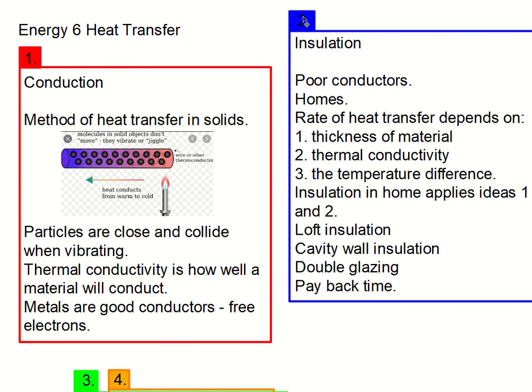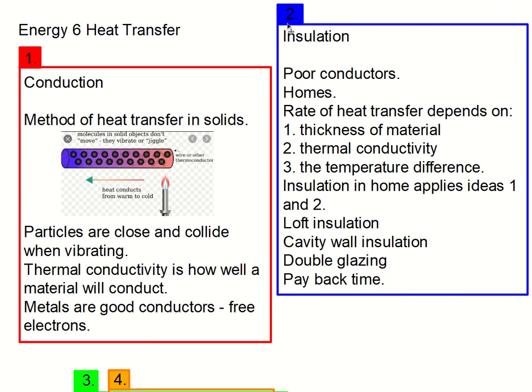So applying this to our homes, looking at this idea of insulation. So an insulator is a poor conductor. To prevent our homes from losing too much heat energy and therefore wasting energy and wasting money, we insulate them. So the speed that heat transfer depends on, depends on three things. Number one, the thickness of material.